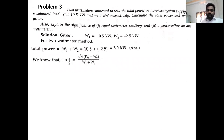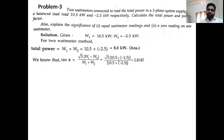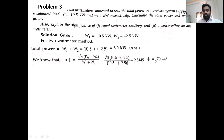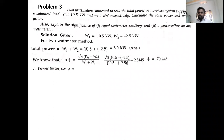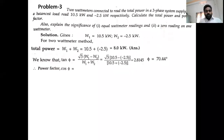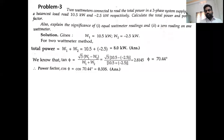Next, calculate tan φ: tan φ = √3 × (W1 − W2) / (W1 + W2) = √3 × (10.5 − (−2.5)) / (10.5 + (−2.5)) = √3 × 13 / 8 = 2.8. Therefore φ = 70.44°. Power factor = cos(70.44°) = 0.335.